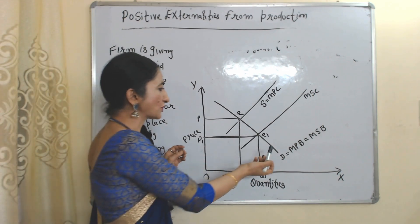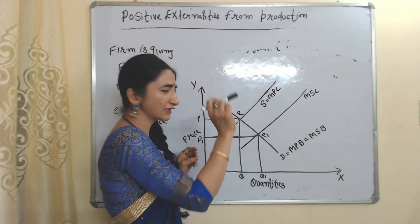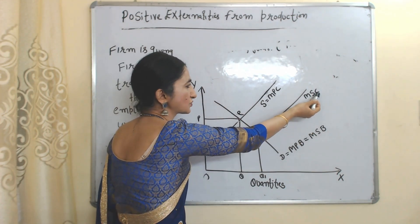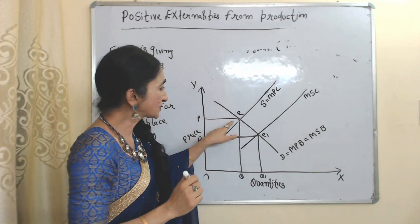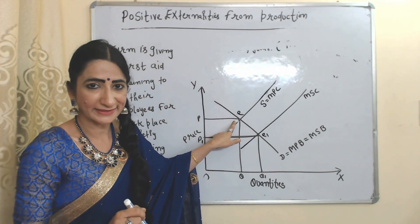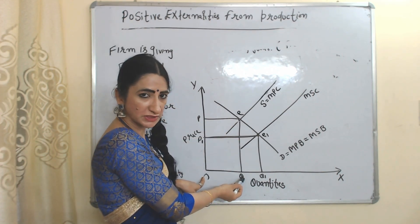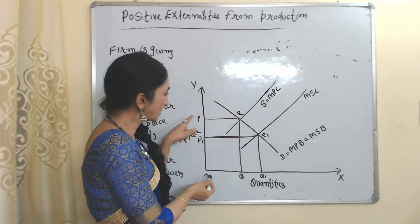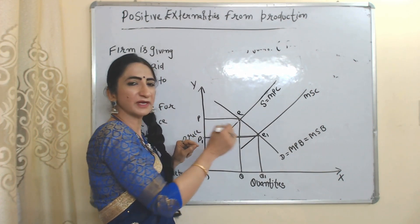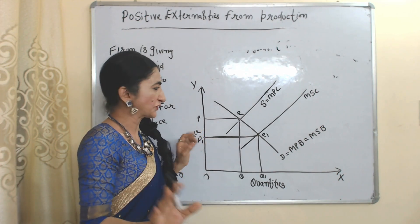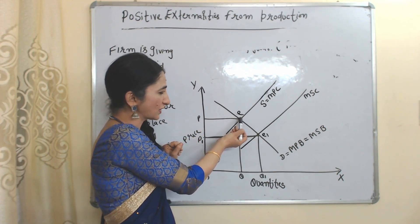Now we will see positive externalities in production with the help of this diagram. This one is the demand curve, which is equal to MPB and MSB as we discussed earlier. This one is the marginal social cost curve and this one is the marginal private cost curve. E is our initial equilibrium point, where the firm responsible for positive externalities is producing OQ amount of output at OP prices, without any government intervention.